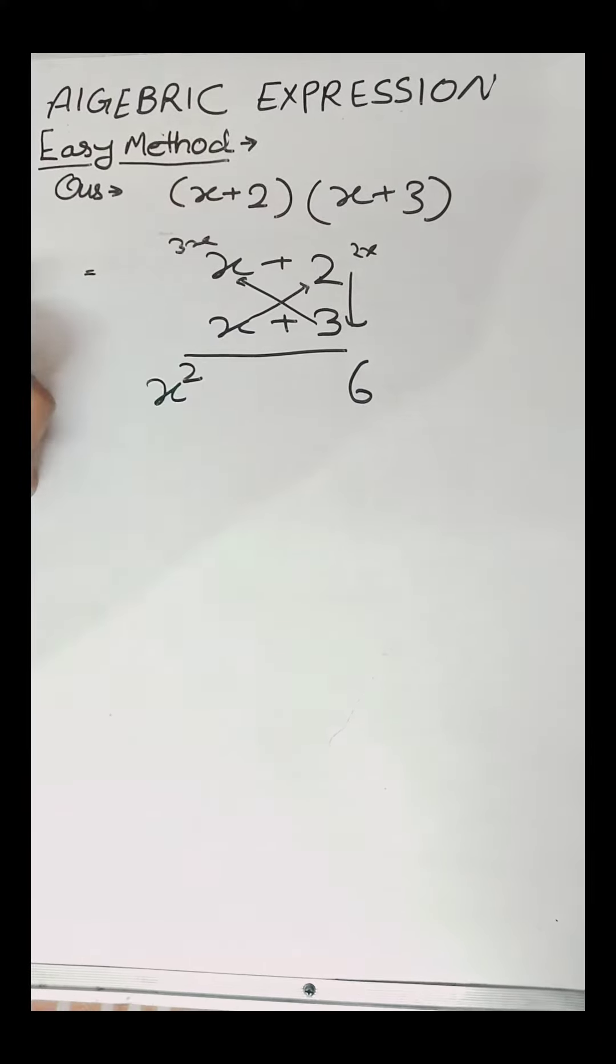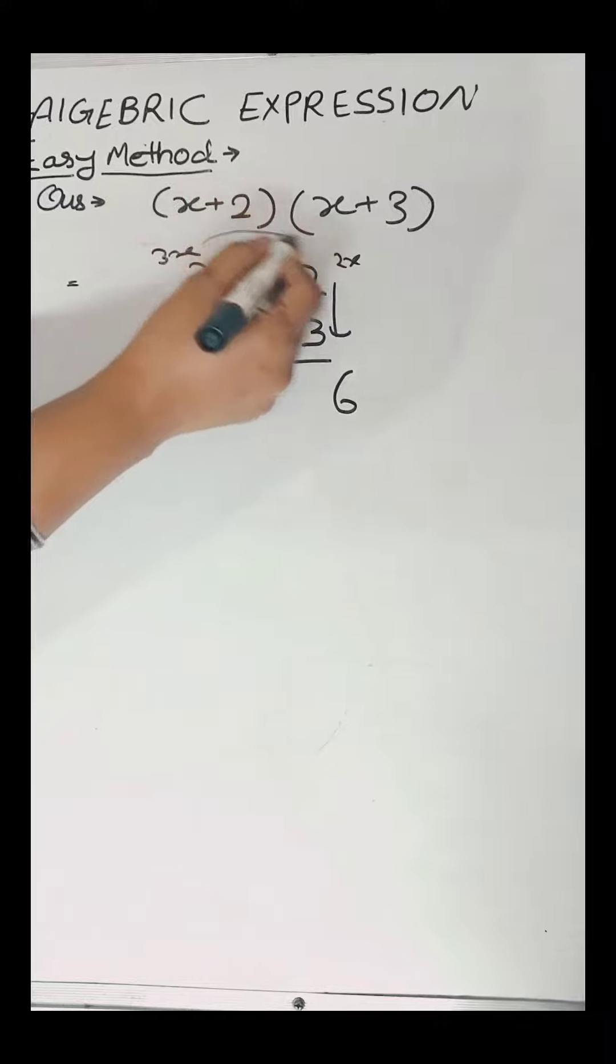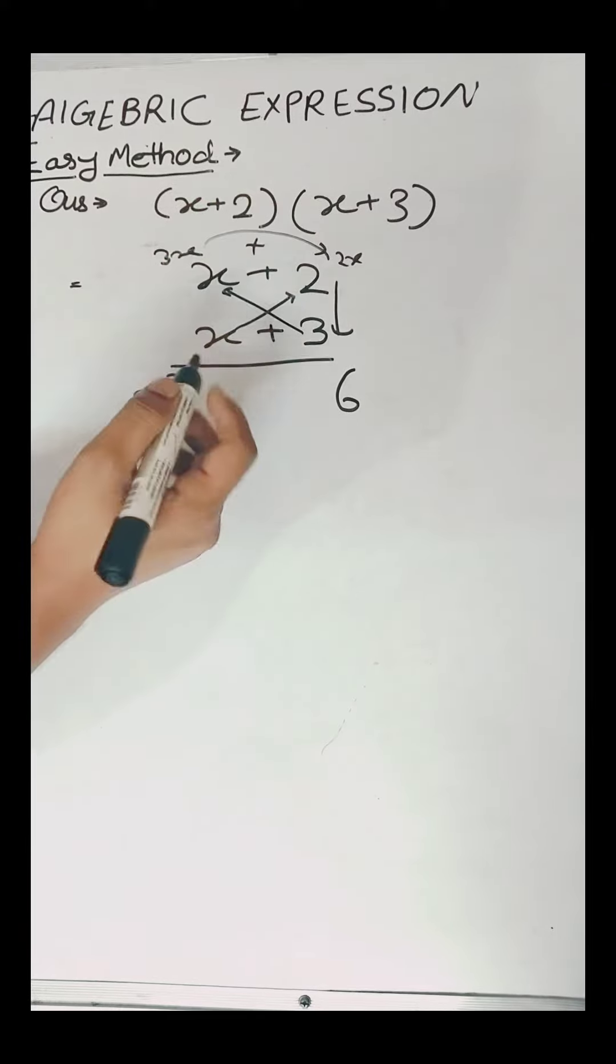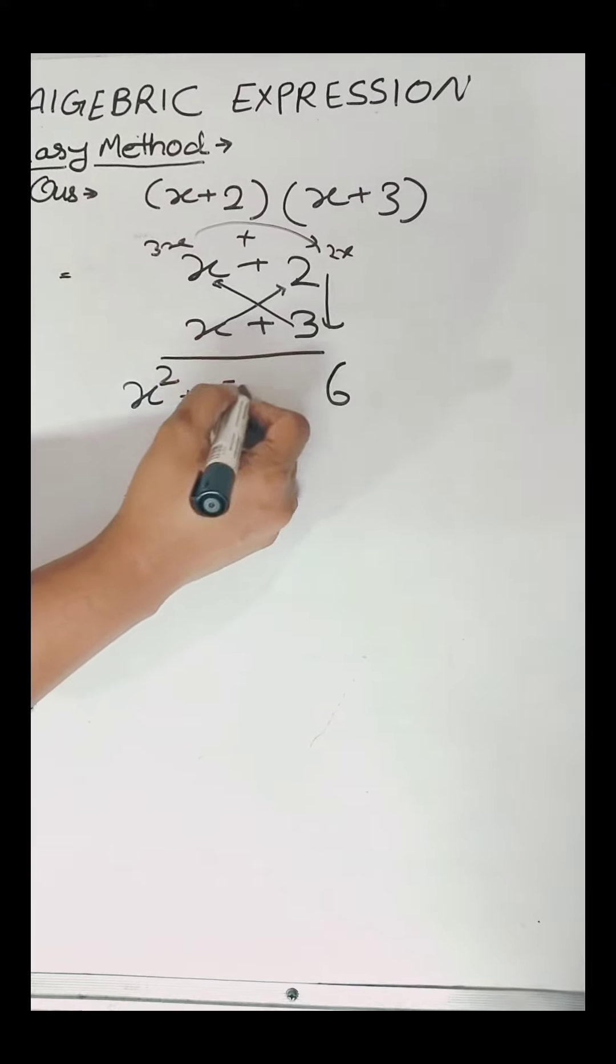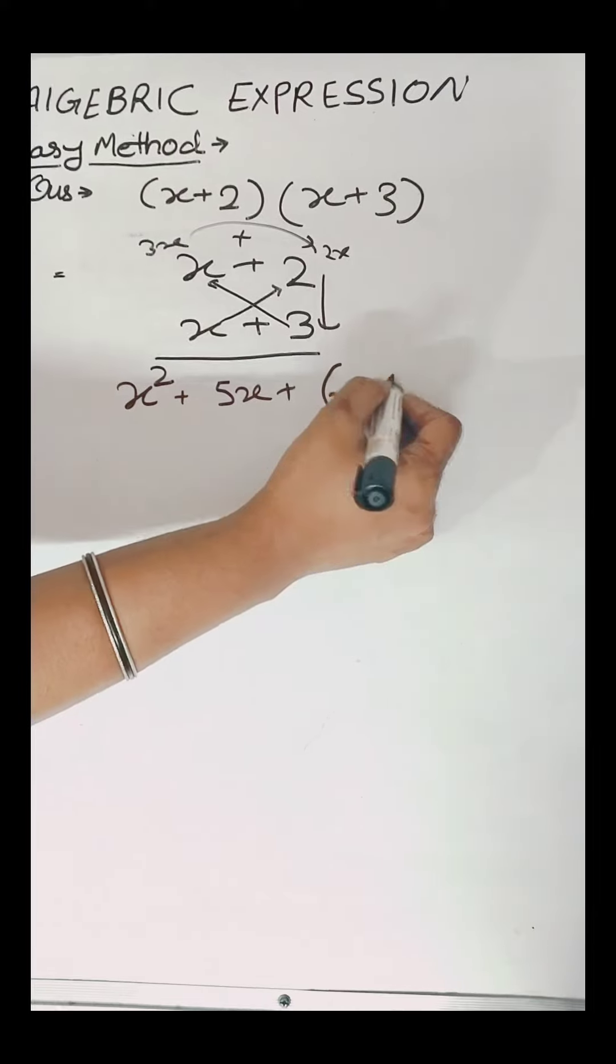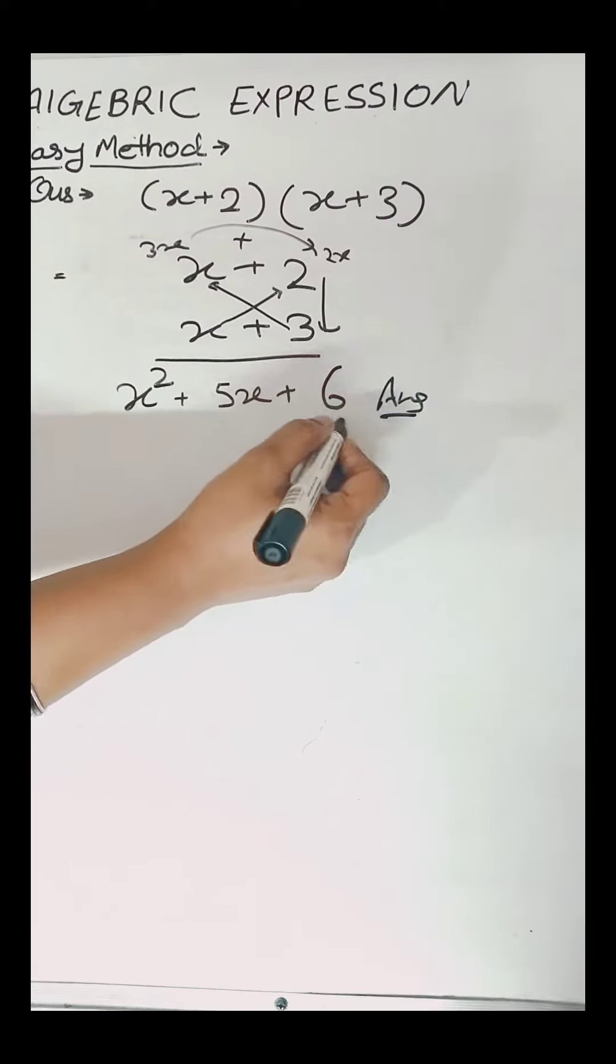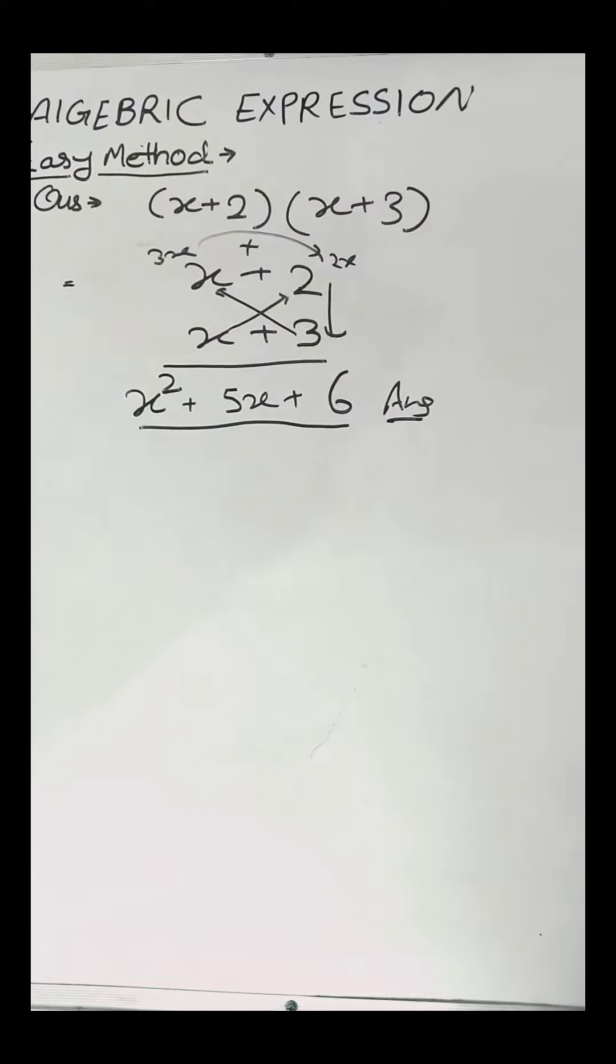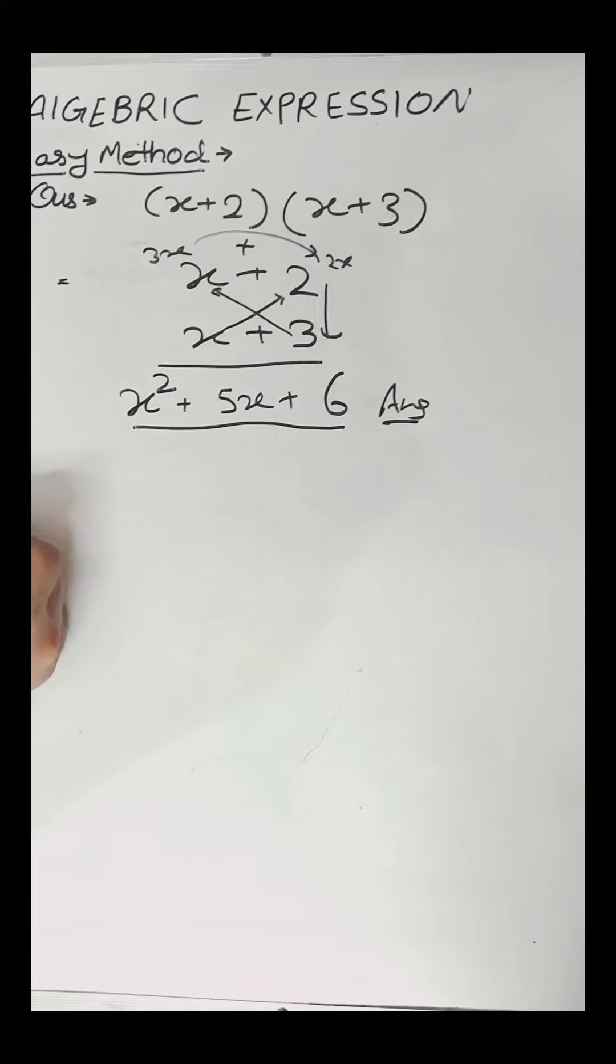Now we will add 3x and 2x, so we will get 5x. So we will write here 5x. So the answer is x square plus 5x plus 6. Isn't it easy? This saves a lot of time.